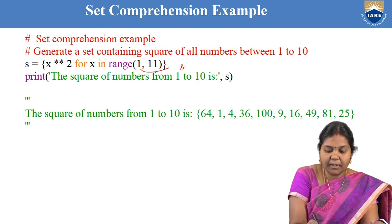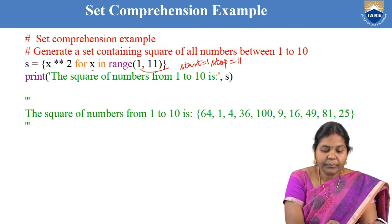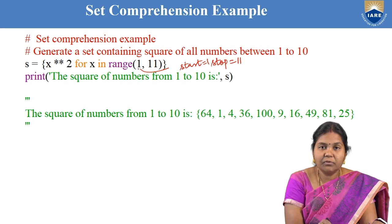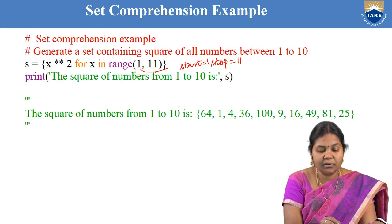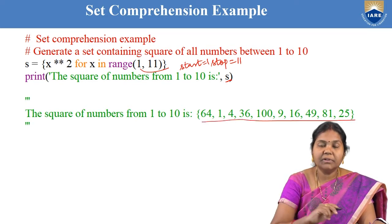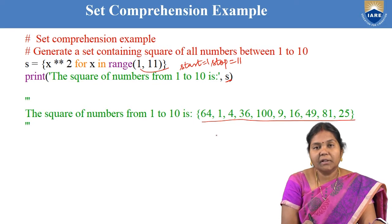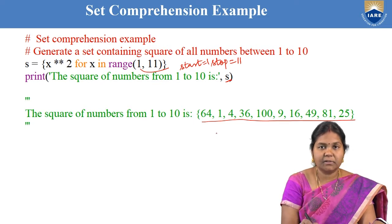Here the start value is 1 and the stop value is 11, so every x value will range from 1 to 10. For every x value, first x equals 1 and it finds the square, then 2 squared, then 3 squared, and so on. The squares are stored in the newly created set. Since a set is an unordered collection, every time you run it you will get a different order — that is the nature of the set.